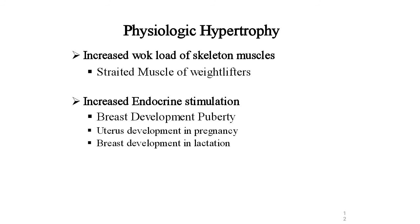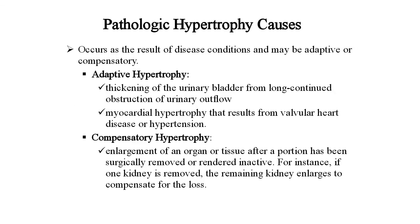Physiological hypertrophy also includes increased endocrine stimulation: breast development at puberty, uterus development, and breast development during lactation. Pathological hypertrophy occurs as the result of disease conditions and may be adaptive or compensatory. Adaptive hypertrophy includes thickening of the urinary bladder due to long-continued obstruction of urinary outflow, or cardiac hypertrophy that results from vascular heart disease or hypertension.